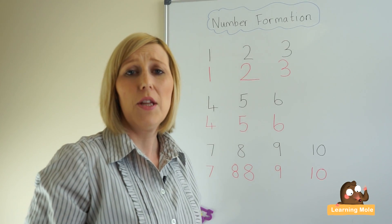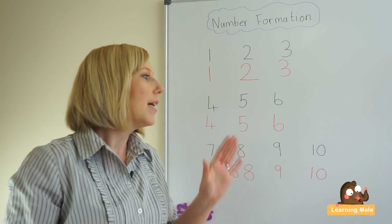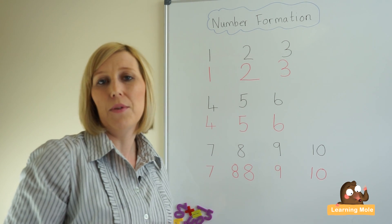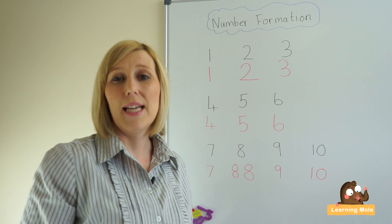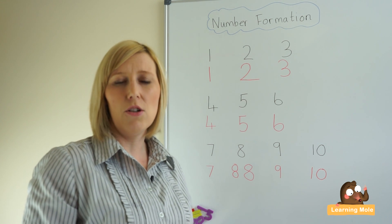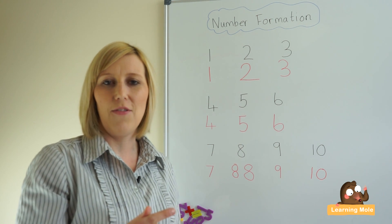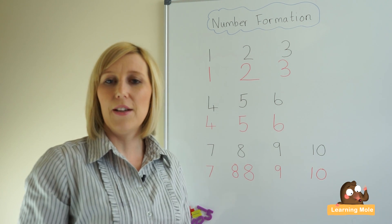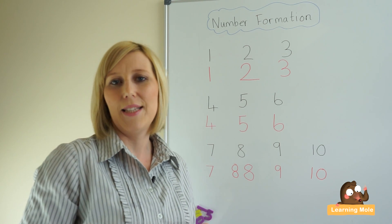So you might want to actually start getting your child to think about and feel the shapes of those numbers. A really good resource that's very cheap and easy to get is sandpaper. Just cut the numbers out of sandpaper and allow your child to trace over the numbers with their fingers so they can actually feel the shape. You can also use a range of different materials — fluffy materials and smooth materials — and make a little game where children put a blindfold on, close their eyes, trace the number, and decide what number it is.